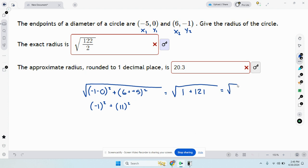So the length of the radius is 122, square root of 122. I'm sorry, the length of the diameter is square root of 122.